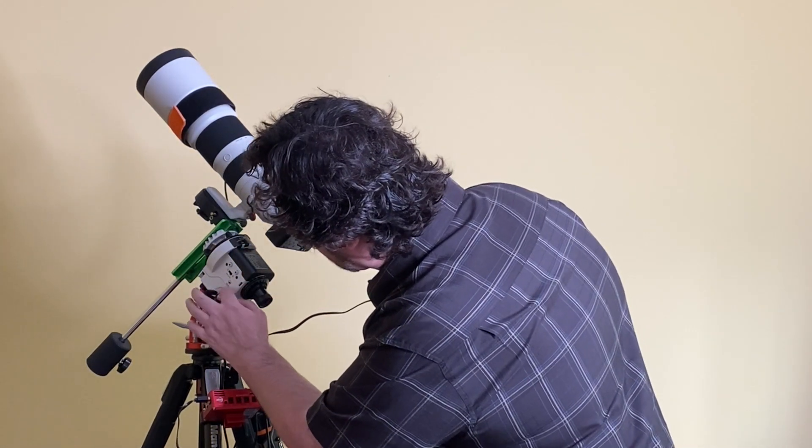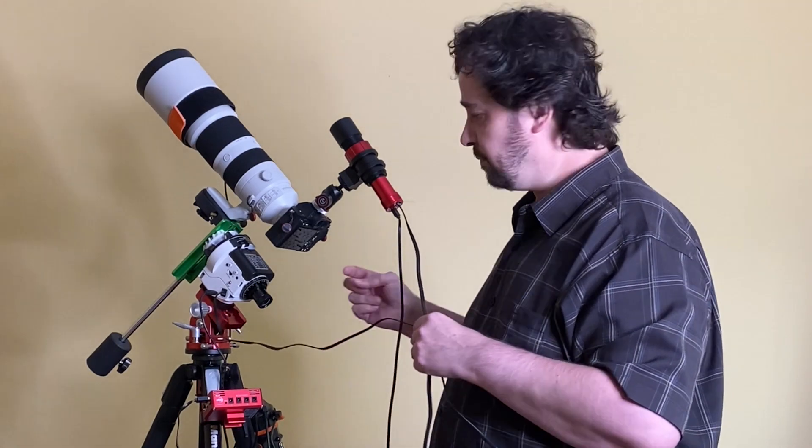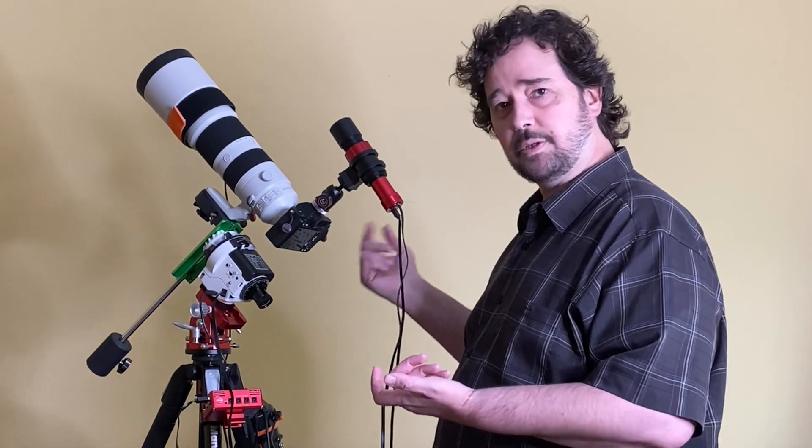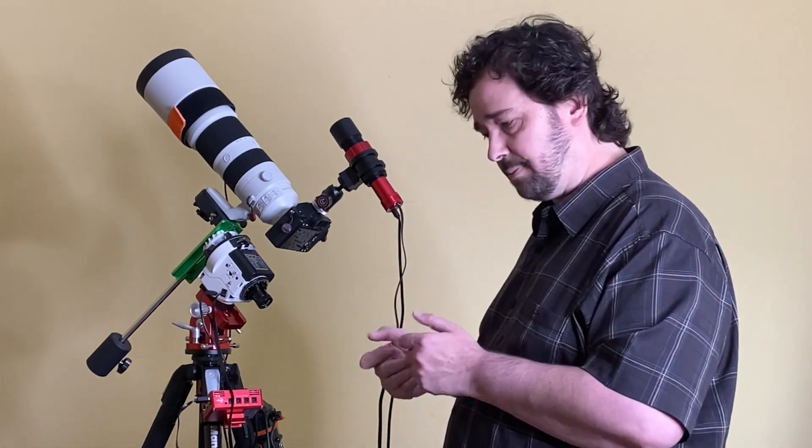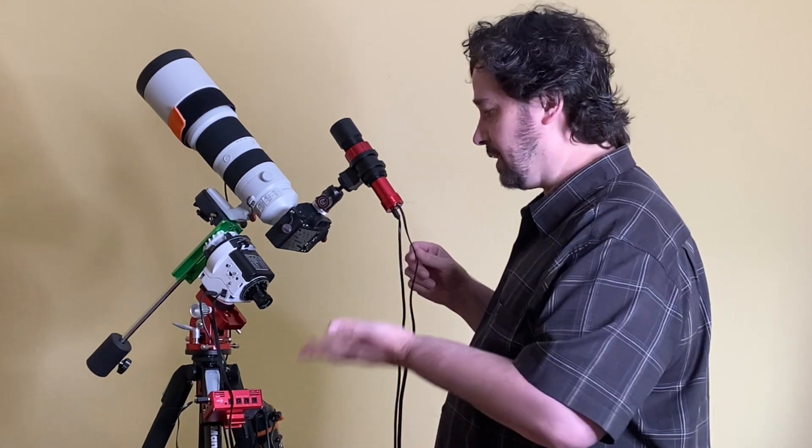So one of these cables goes from the camera to the tracker. So this is an ST4 port, that is a communication protocol for giving the thing little nudges. It used to be in the old days, apparently people would use a hand controller and they'd be watching an image on a guide scope and they'd be by hand giving it little nudges.